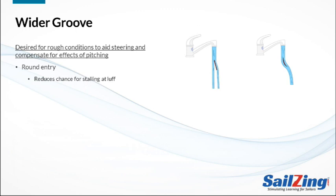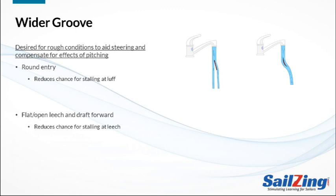Run water over a flat knife and a curved spoon as you change the angle of attack — which stalls first? The knife does, because water can't make the sharp turn all at once. With the round entry — the spoon — the water sticks with no stalling. Also, for a wider groove you want a flat or slightly open leech and the draft position forward.